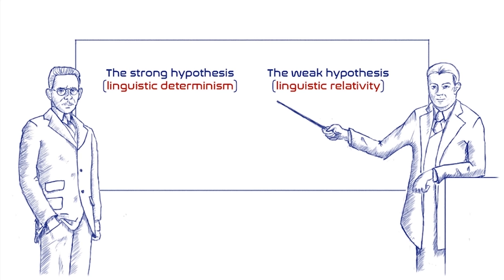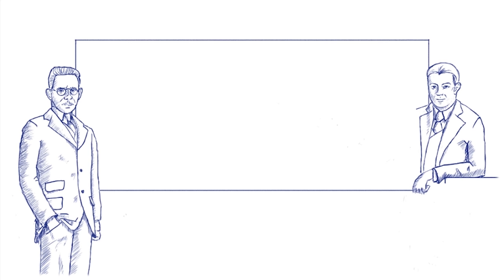According to the strong version, we perceive only what our language allows us to. Such version would suggest that we are figuratively slaves to the words available to us. Although the strong deterministic hypothesis is frequently referred to as the Whorfian view, it's not quite clear how strong Whorf thought the relationship between the two variables was.